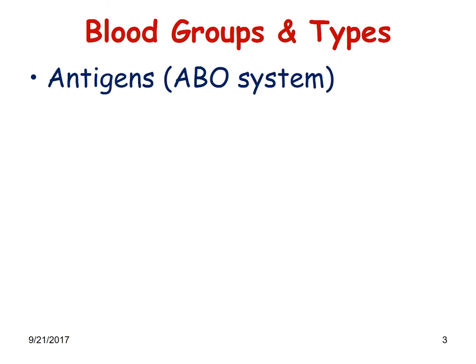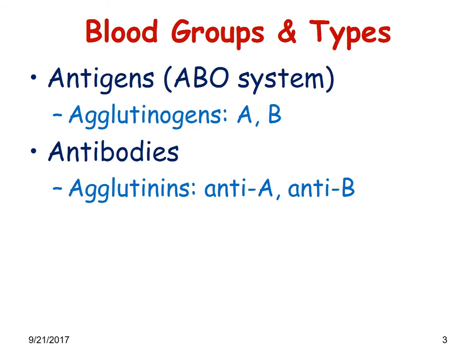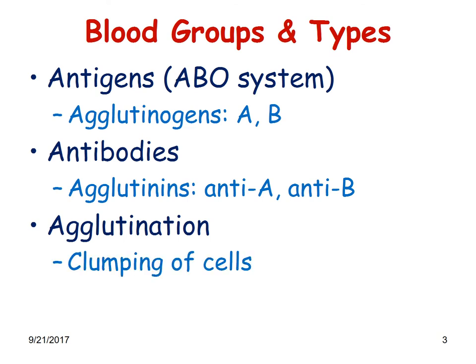The antigens of the ABO system are agglutinogens A and B, while the antibodies are the agglutinins anti-A and anti-B. Agglutination is a process of clumping of the red cells.